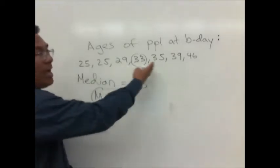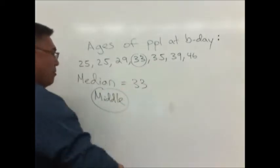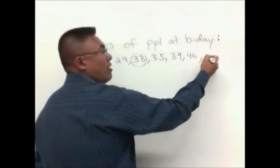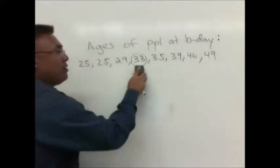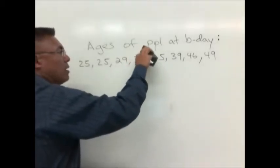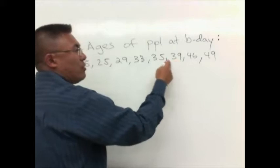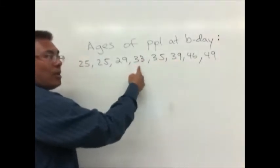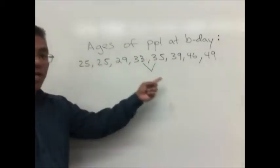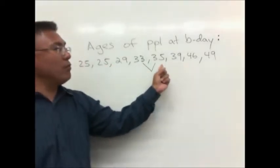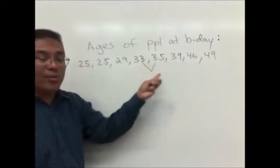Now in this case we had an odd number of values, 1, 2, 3, 4, 5, 6, 7. So there's going to be one value that's right in the middle. But what if we took an even number of data points? Now instead of 7 values, we have 8. So 33 is no longer in the middle. These two values are in the middle: 33 and 35 are the two middle values of our range. Now what we need to do is find the value that's right in between 33 and 35.